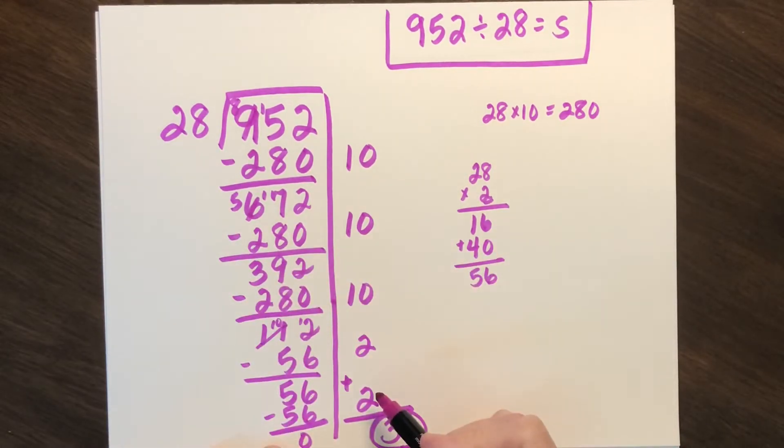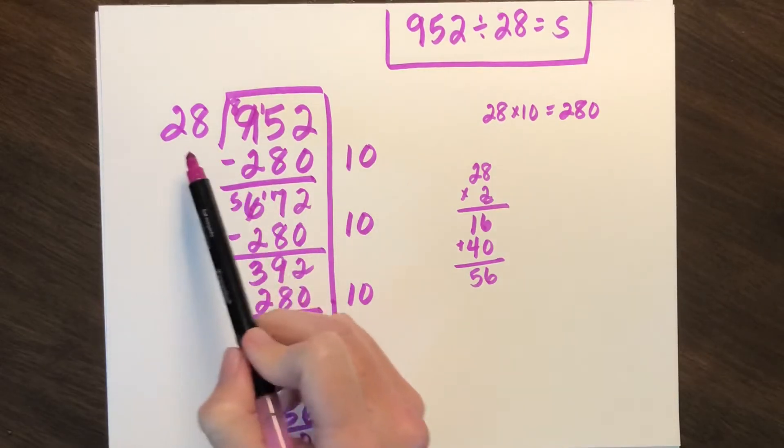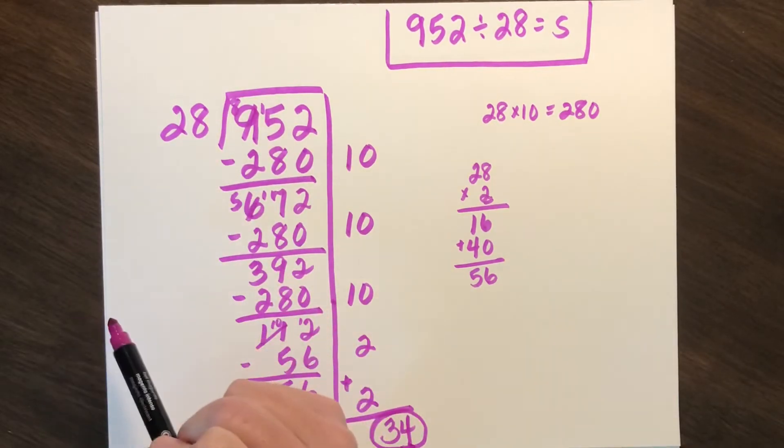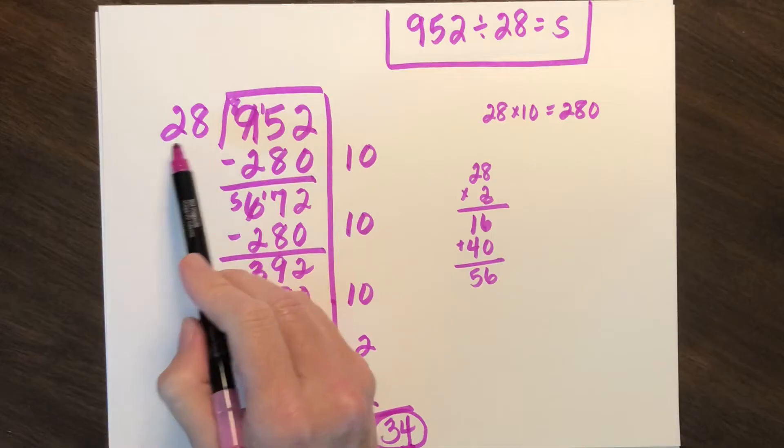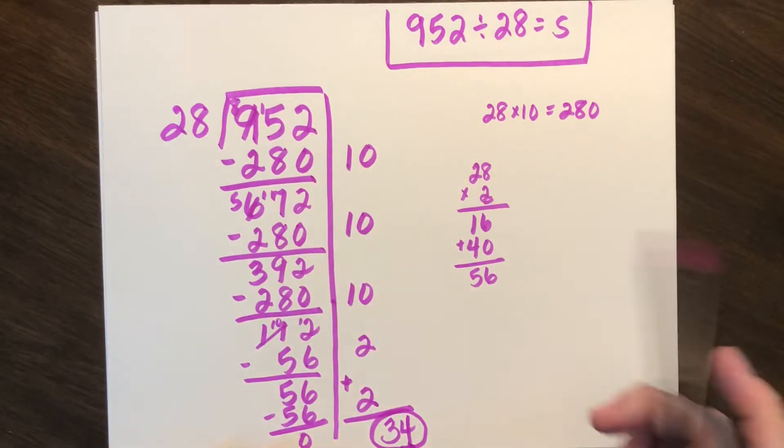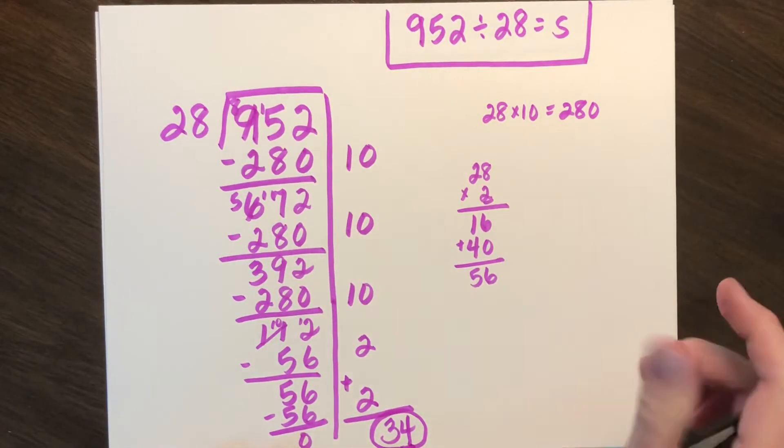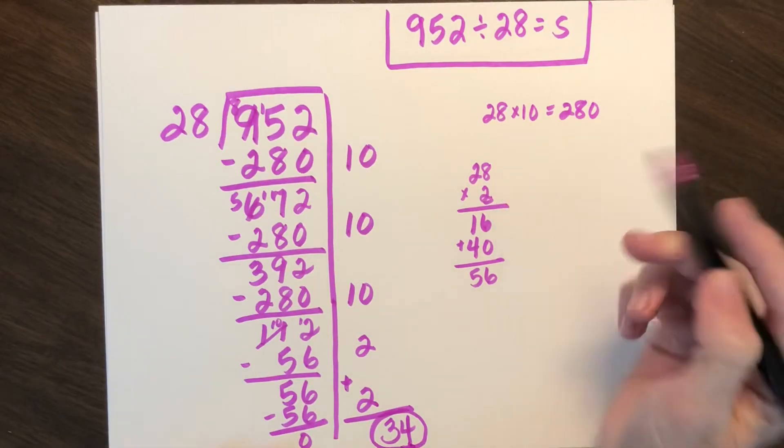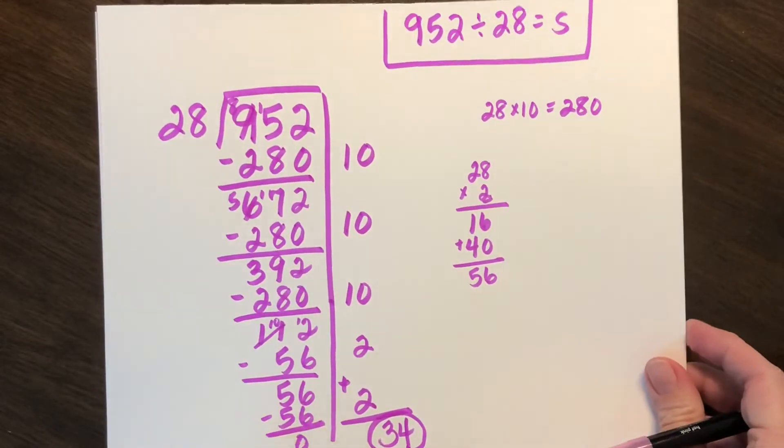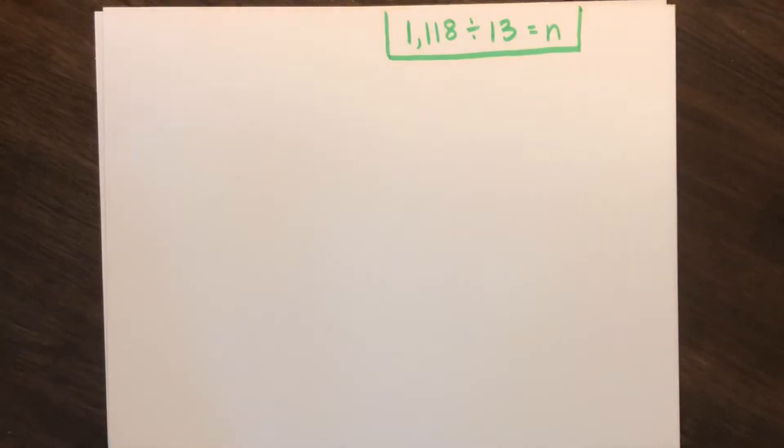So very similar process with partial products. We're just using the two-digit number. Again, look for, think of multiples of 10, perhaps. Those are friendlier or two, maybe even multiples of five. So be thinking of your multiplication facts.